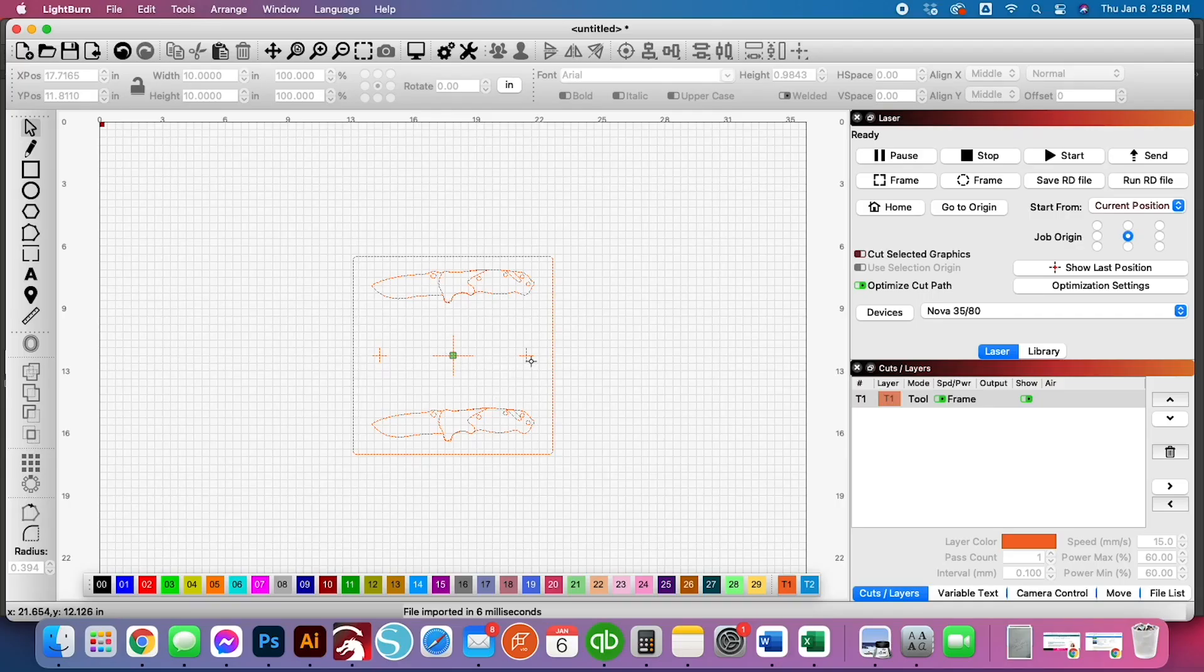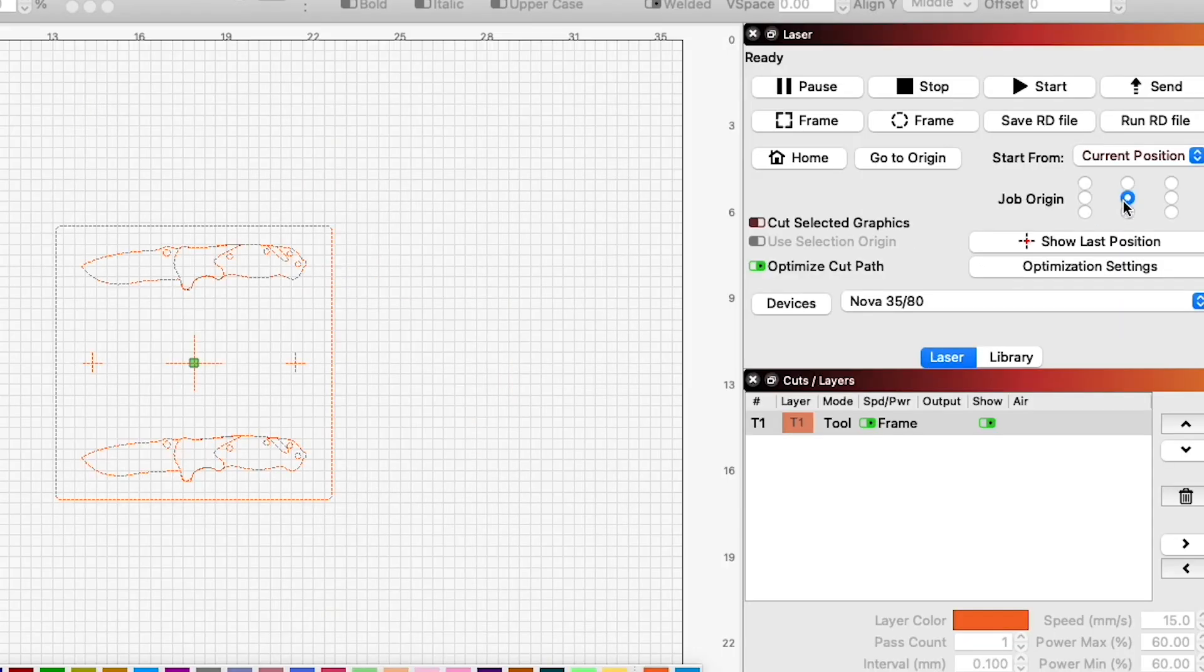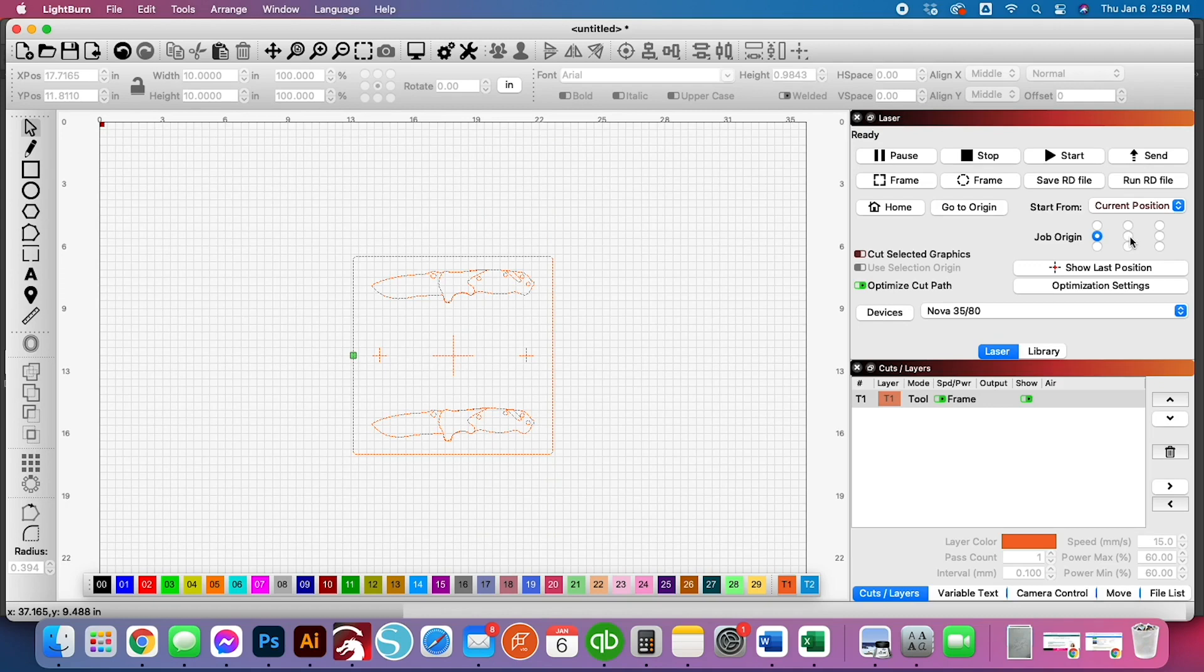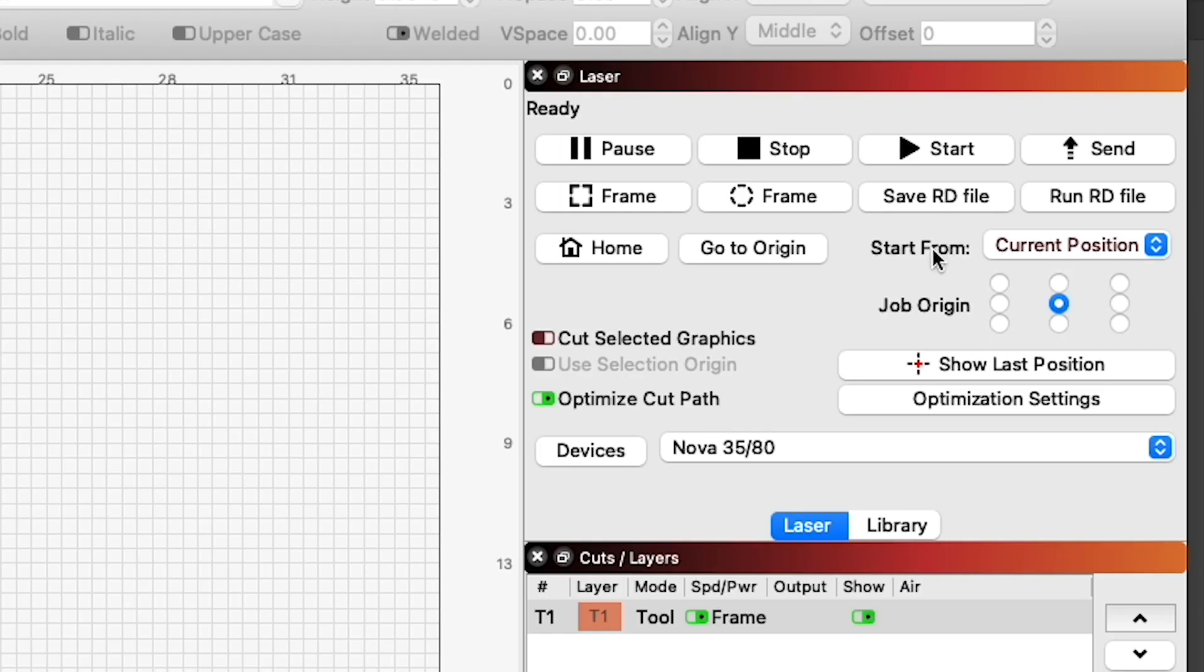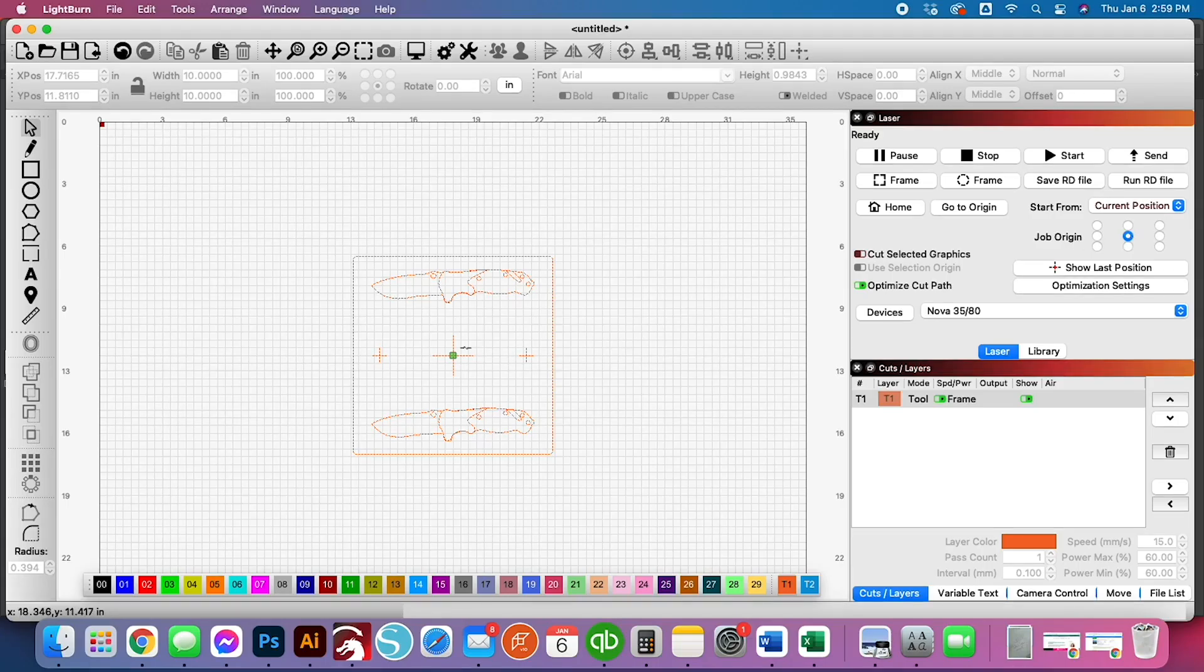One thing right off the bat that I want to point out is you'll notice the little green dot right in the center. That's the way that we work on a lot of things. You'll see over here, job origin. You can select the upper left, upper right, any of these corners here, and even in the middle. We're going to start from the center and make sure that the start from point is current position. We're starting from the current position and doing the job origin from the center.